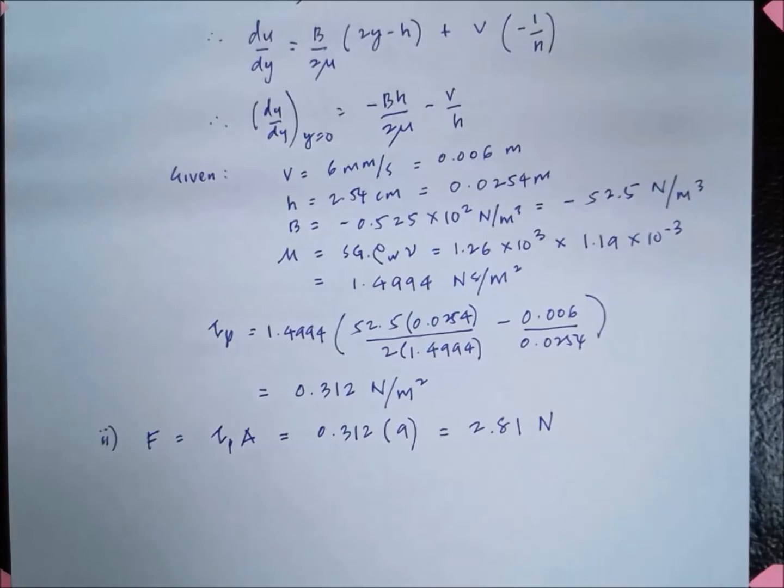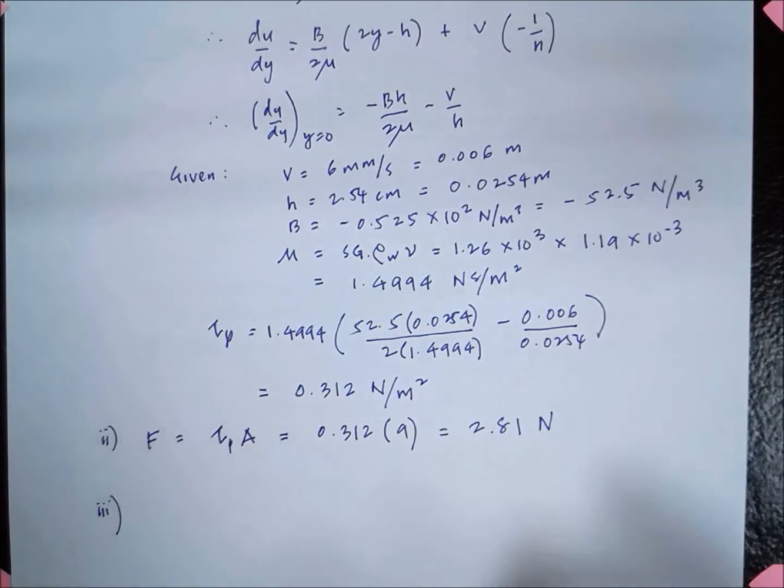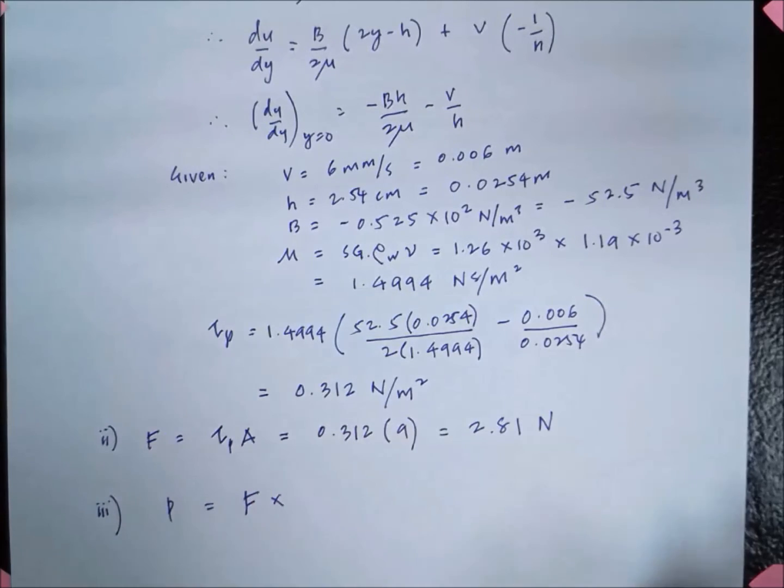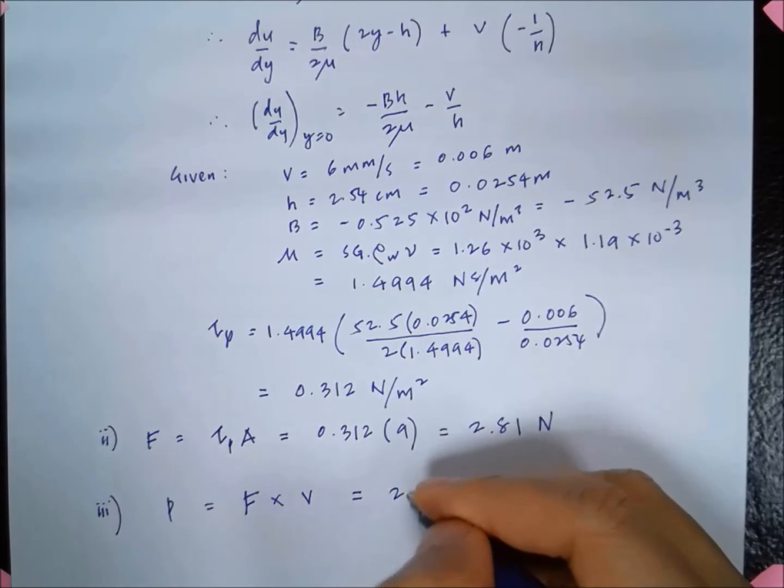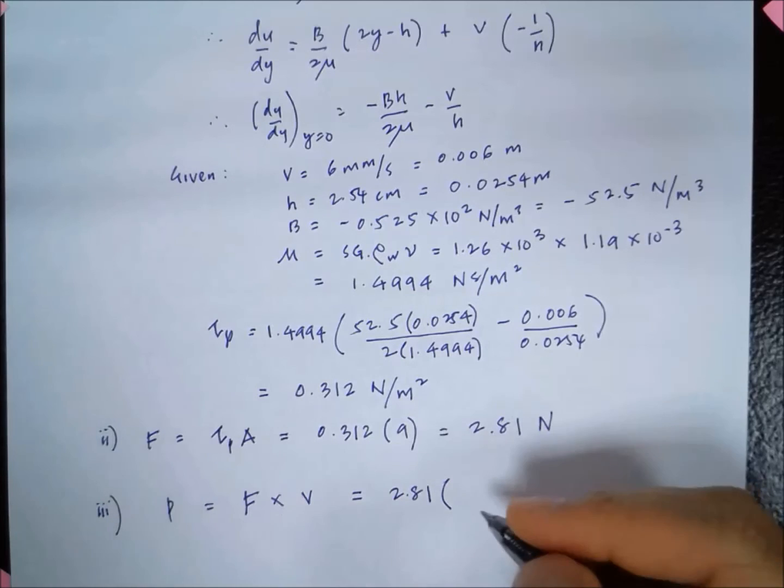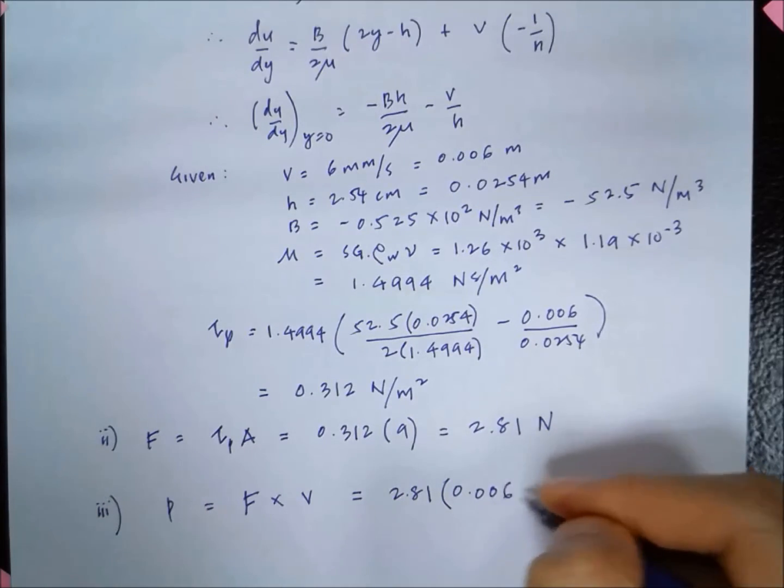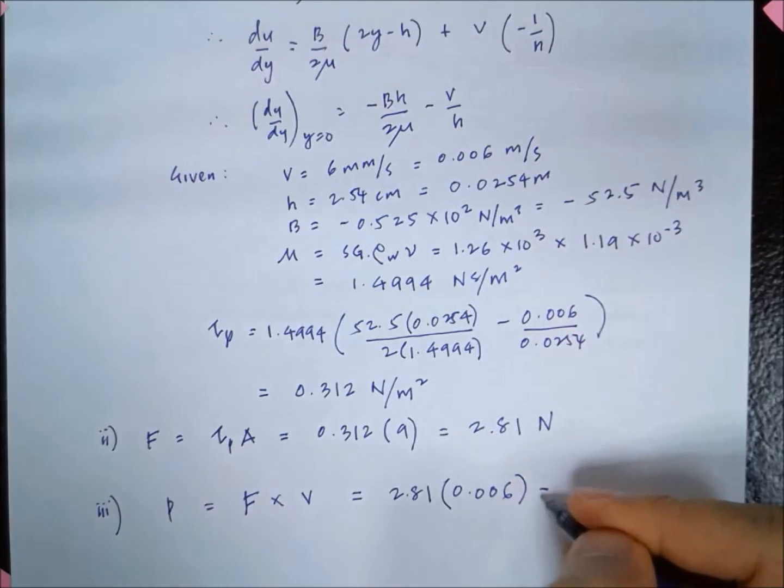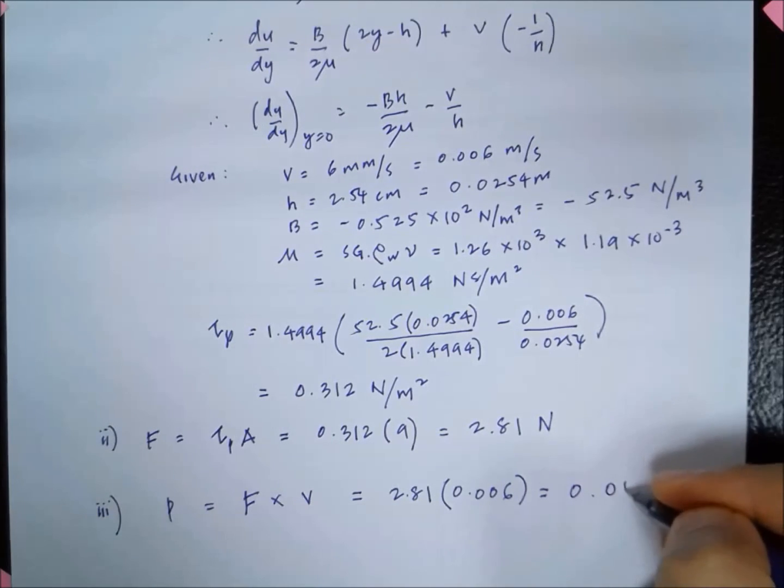The final part of the question is calculating the power. Power is force multiplied by velocity. So that is 2.81 multiplied by 0.006 meter per second, which gives us 0.0169 watt.